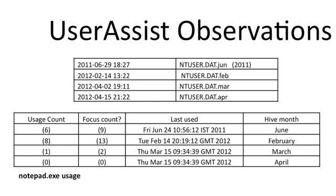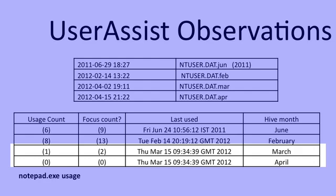The application started at a number, went up, then went down and down even further. On Windows 7, it records the usage count, a focus count, and the last time something was used. It did not make sense that the usage count was going down to zero. Looking at it in further detail across multiple hive sets, it appeared there was a persistent reset to zero occurring around about month end. The last usage time had been retained, so I knew the value was being reset to zero even though it was still recorded that the application had been used.